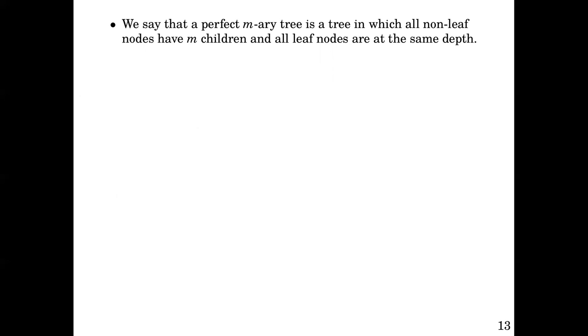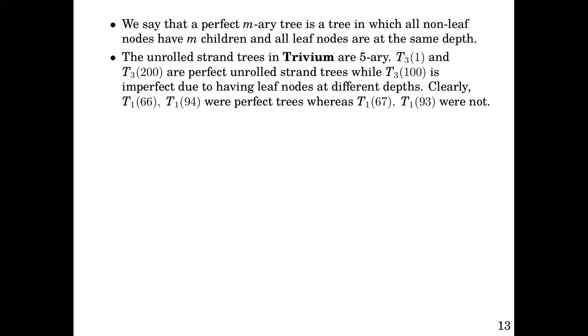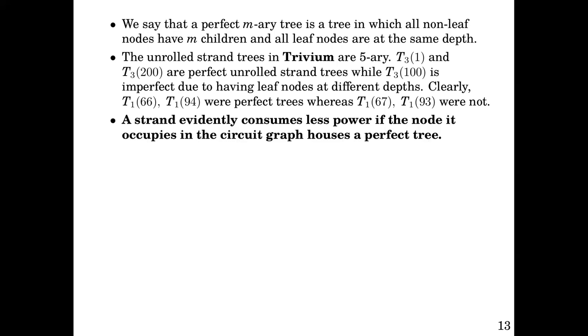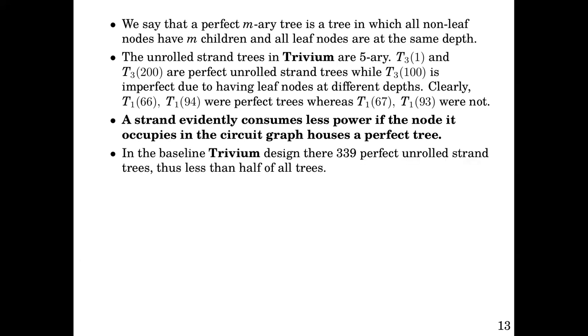We say that a perfect m-ary tree is a tree in which all non-leaf nodes have m children and all leaf nodes are at the same depth. The unrolled strand trees in trivium are 5-ary. Capital T i of 1 and capital T i of 200 are perfect unrolled strand trees, while capital T i of 100 is imperfect due to having leaf nodes at different depths. Clearly, capital T i of 66, capital T i of 94 were perfect trees, whereas capital T i of 67 and capital T i of 93 were not. A strand evidently consumes less power if the node it occupies in the circuit graph houses a perfect tree. In the baseline trivium design, there are 339 perfect unrolled strand trees, thus less than half of all trees.